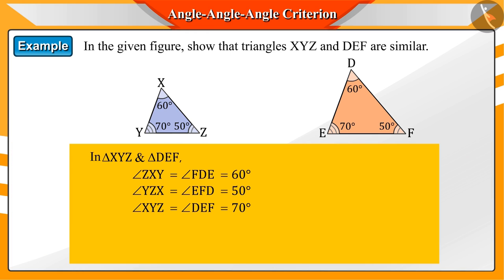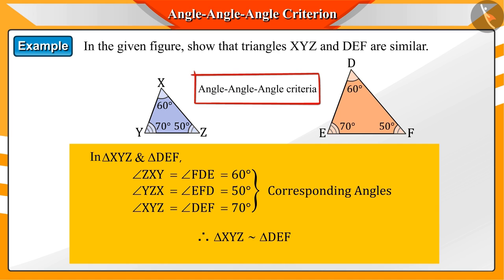Here, we see that the corresponding angles of triangles XYZ and DEF are equal. That is, by AAA criteria, triangles XYZ and DEF are similar.